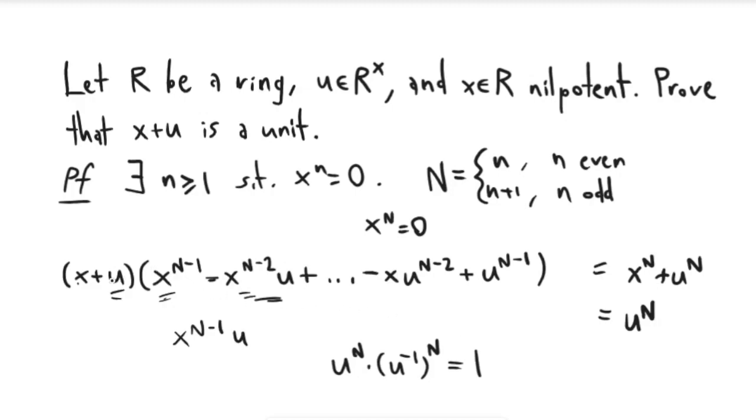And so in particular, that means that if I multiply this expression by u inverse to the n, so now this is going to be x to the n plus u to the n, and then I'm also going to multiply by u inverse to the n, that this is going to be 1.